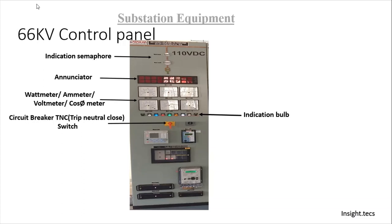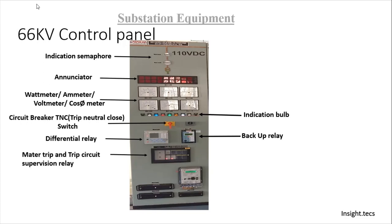Next is the circuit breaker TNC switch. Using this switch, the breaker can be operated from the control room. Next is a differential relay. These relays are always present in any transformer panel. Next, there are backup relays — these are the main operating relays. And there is a master trip and trip circuit supervision relay. In later videos, we will learn more in detail about these kinds of relays.